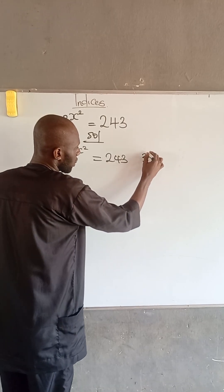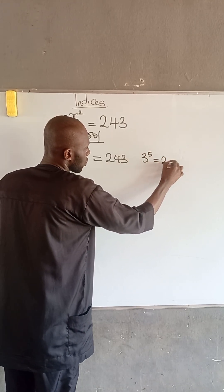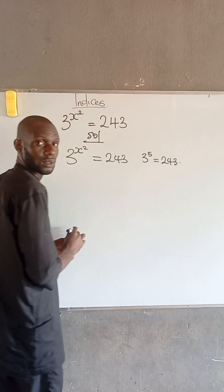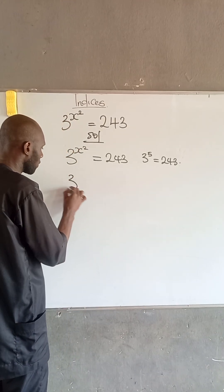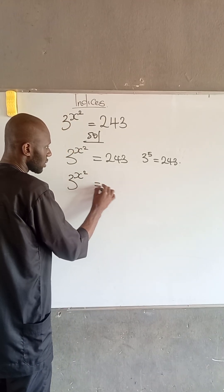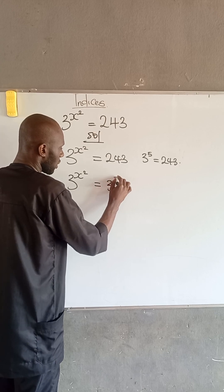Yes, we have that 3 to the power of 5 is equal to 243. Therefore, the equation now becomes 3 to the power of x squared is equal to 3 to the power of 5.